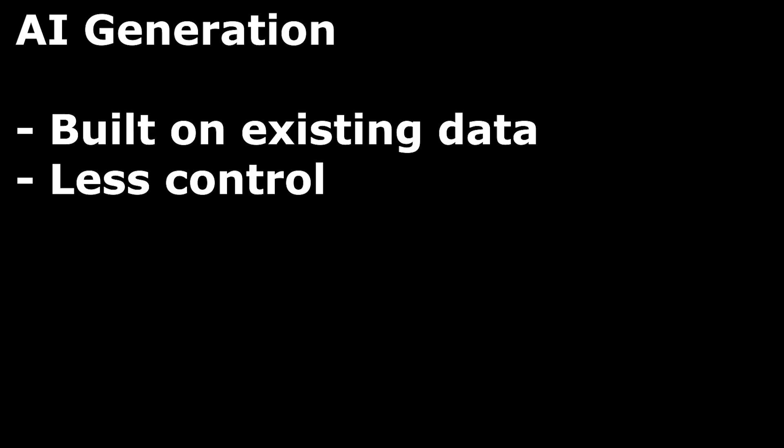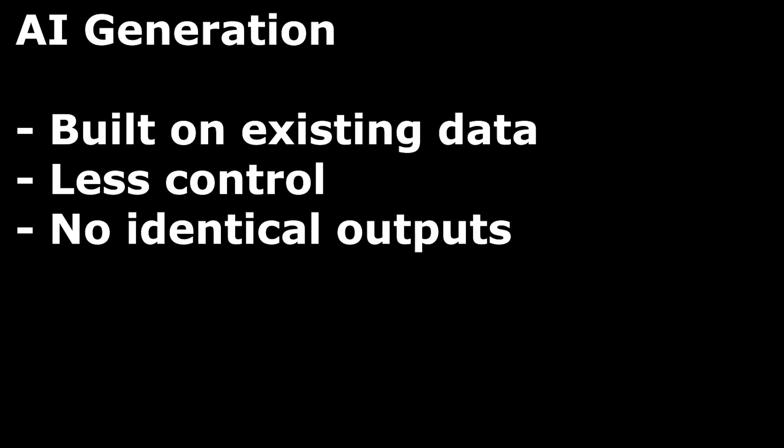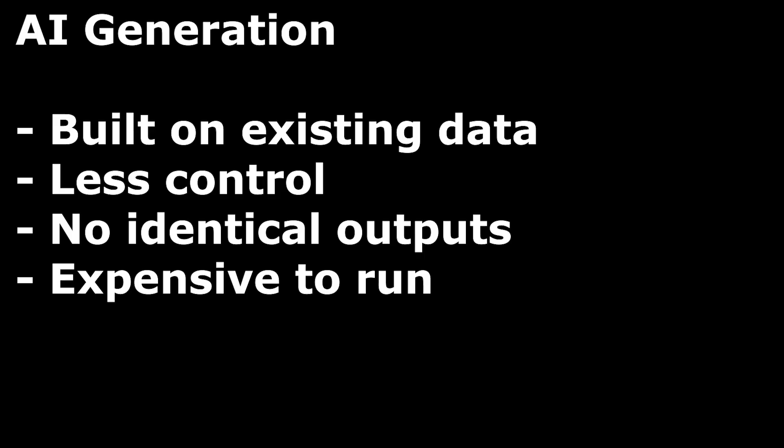AI generation, on the other hand, is built on pre-existing data and uses pattern recognition to create new content. Developers also have a lot less control over what is produced — you can pretty much never get the exact same output. Oh, and it also uses a huge amount of power.